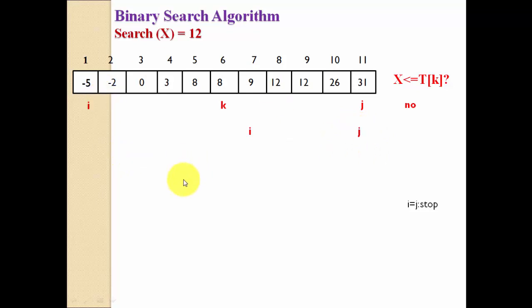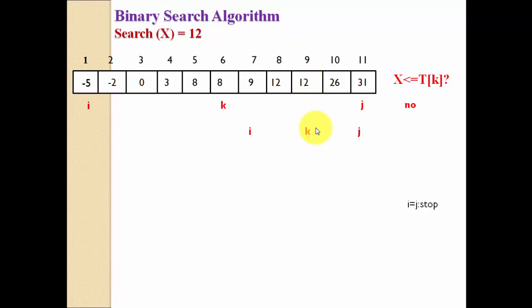Now we follow the same step again. Find the middle element: k = (i + j) / 2 = (7 + 11) / 2 = 9. So the middle element is at position 9. We compare our searching element 12 with the middle element at index 9, which is also 12. Since 12 ≤ 12 (less than or equal), our element is in the left part.